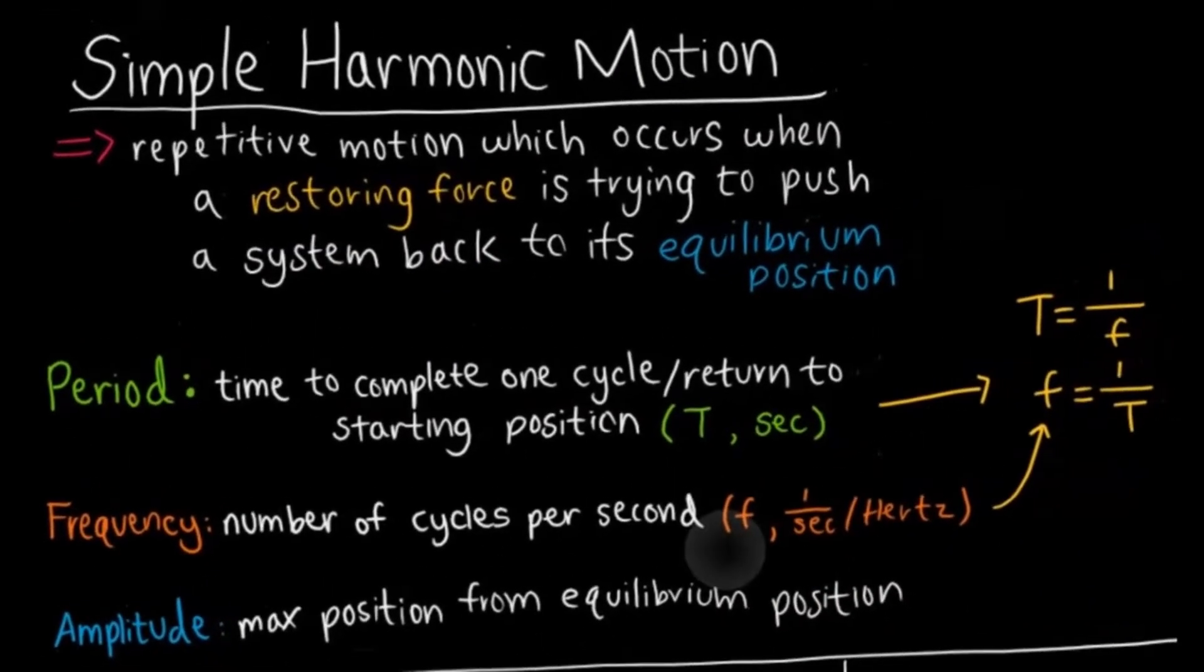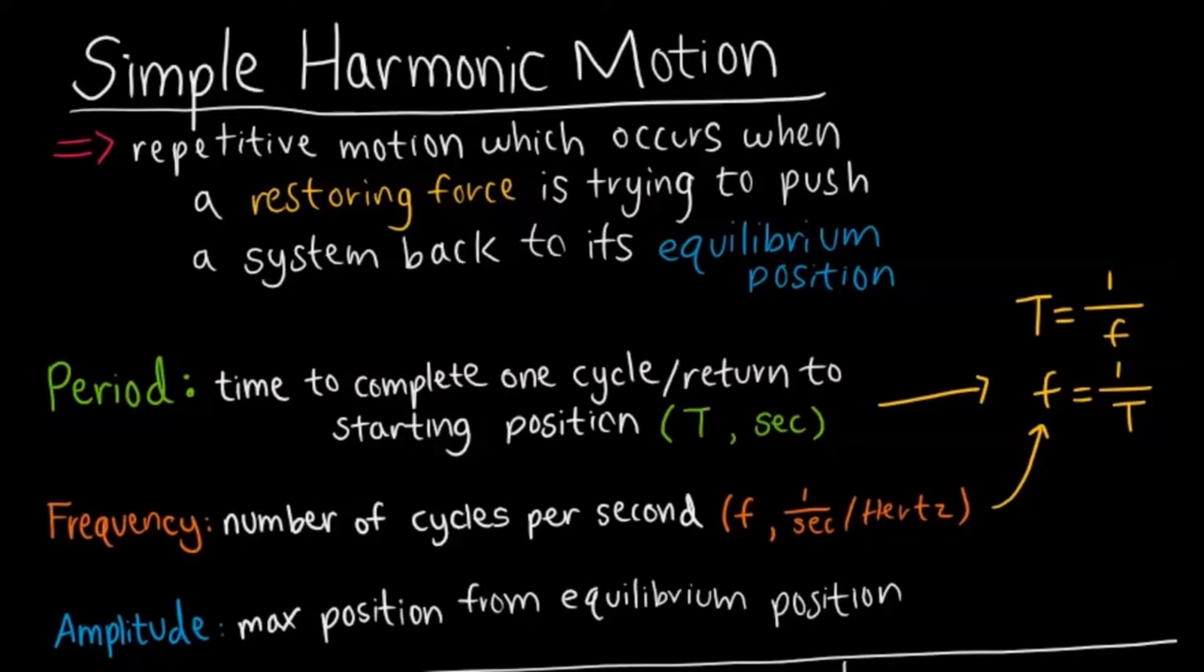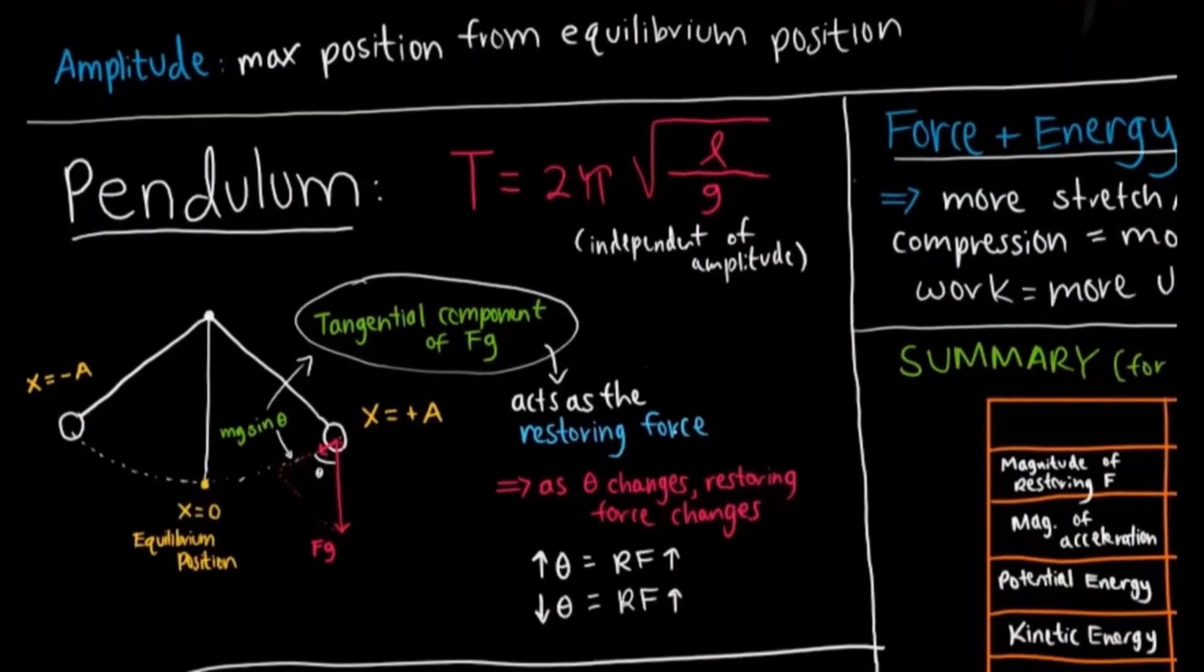A couple of key vocab terms that you're going to need to know for this unit is period - that's the time it takes to complete one full cycle and return back to its starting position after it oscillates. Then you have frequency, and that's sort of like the inverse of that, the number of cycles per second. You can see the equation T equals 1 over frequency. And then you have amplitude - that's just the maximum position from the equilibrium position that your block or pendulum reaches when it oscillates.